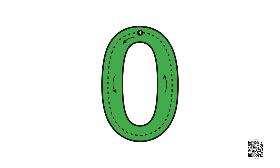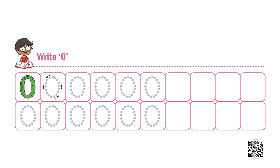All the birds flew away and we have zero birds now. Dear friends, let's practice how to write a zero. Can you do it with me? We begin from the top and go like this and make an oval — so this becomes our zero. Dear friends, you can practice writing zero in the given boxes.